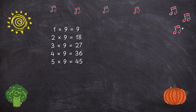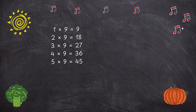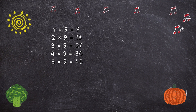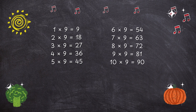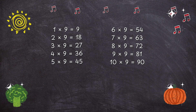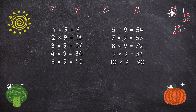1 times 9 is 9. 2 times 9 is 18. 3 times 9 is 27. 4 times 9 is 36. 5 times 9 is 45. 6 times 9 is 54. 7 times 9 is 63. 8 times 9 is 72. 9 times 9 is 81.